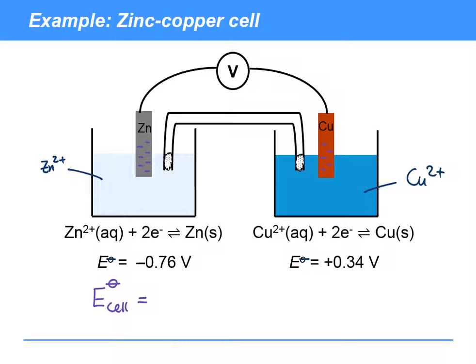There's essentially now two stages to working out the cell potential. The first stage is to work out what is the positive pole and what is the negative pole in the cell.